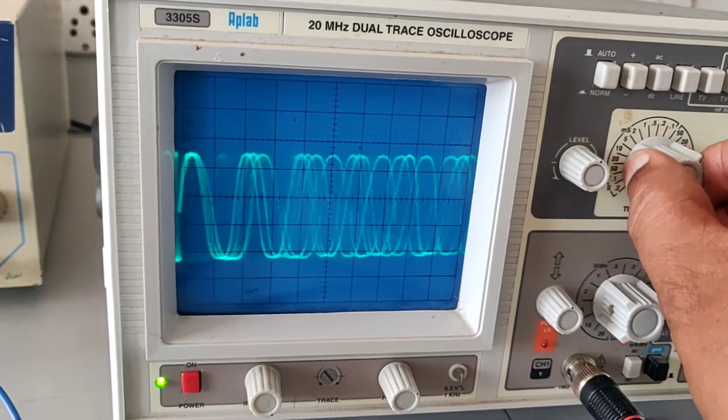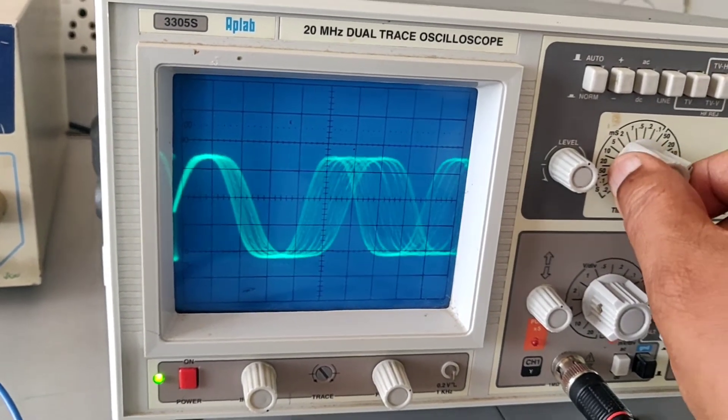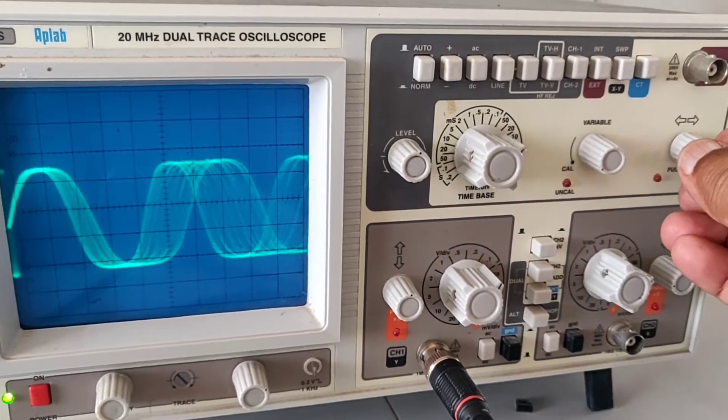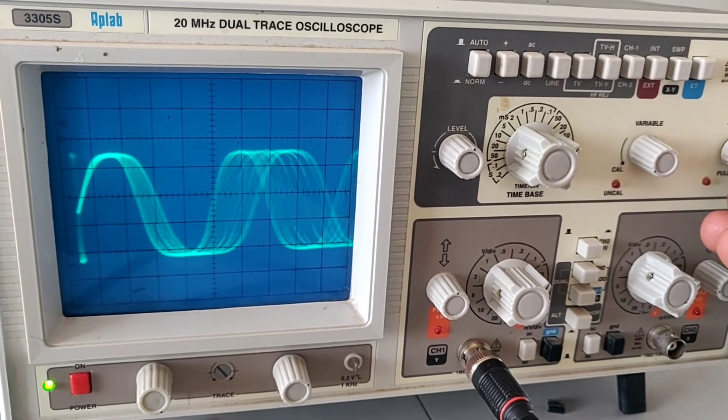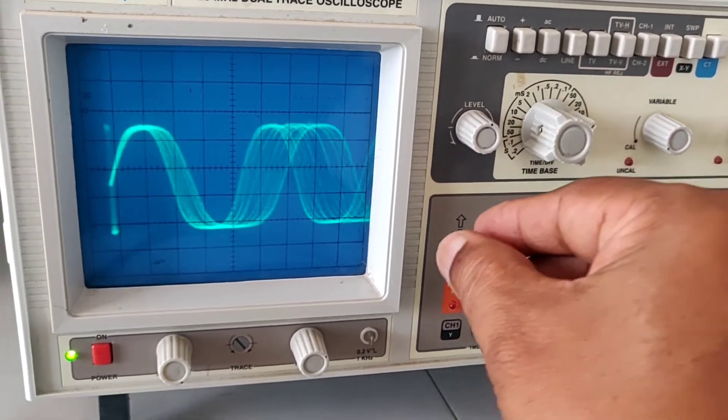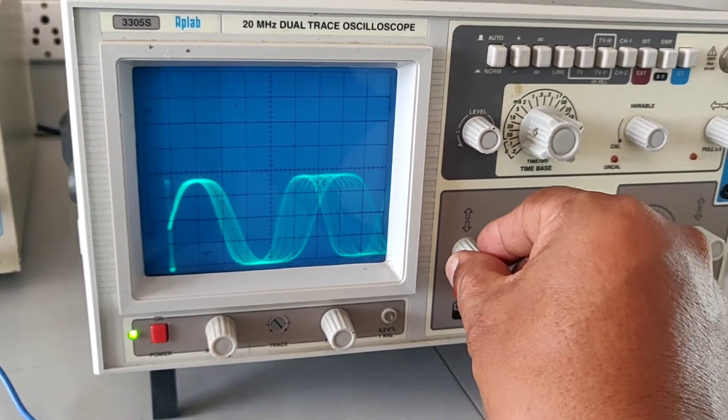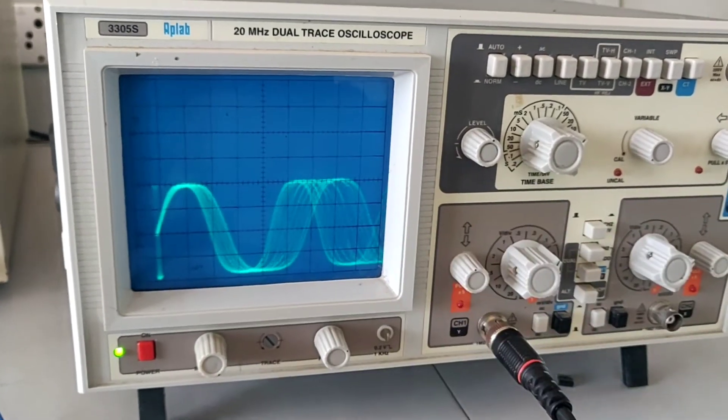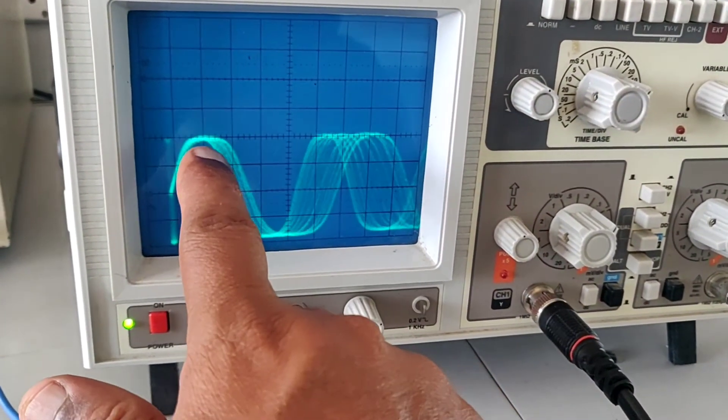Now, turn the time-based control as shown. See that, you will get the waveform like this. From this waveform, you can measure F max and F minimum easily without any problem.